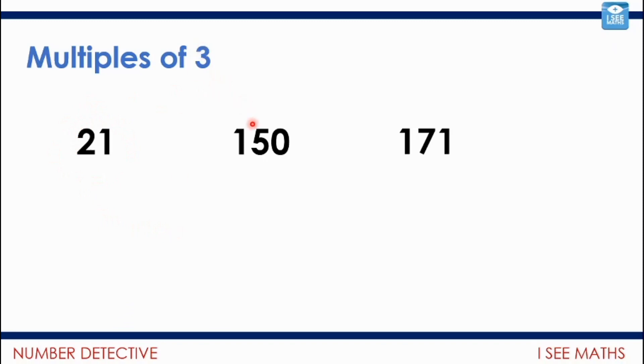And actually, I know that 171 is a multiple of 3. Now, I might not instantly have recognised that. But you notice, it's actually a part of 150, which is a multiple of 3, and 21. Add those two together. 171. So 171 must be a multiple of 3 as well.